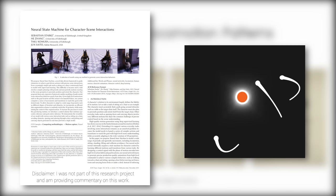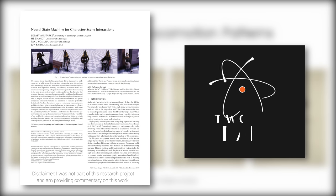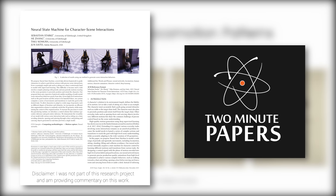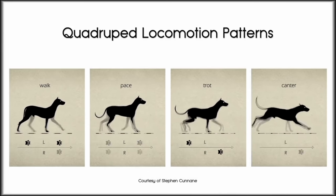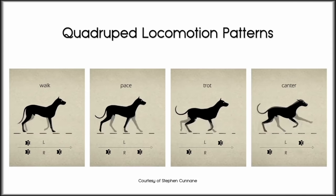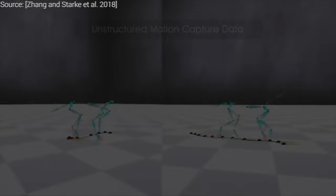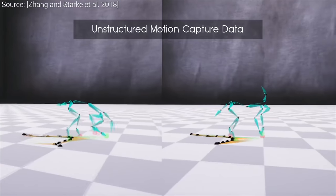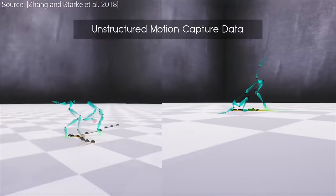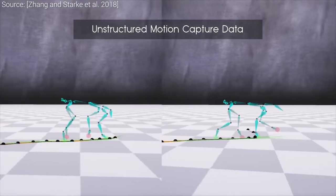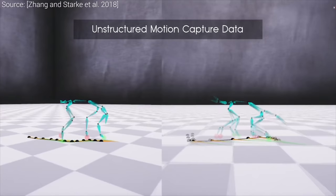Dear Fellow Scholars, this is Two Minute Papers with Károly Zsolnai-Fehér. If we have an animation movie or a computer game with quadrupeds and we are yearning for really high quality, lifelike animations, motion capture is often the go-to tool for the job.